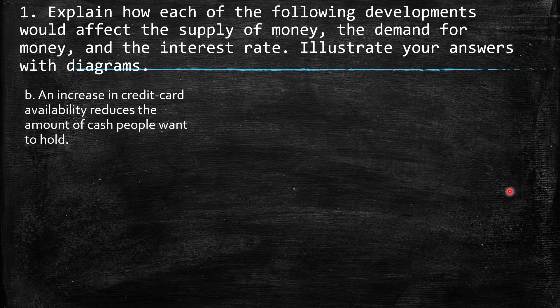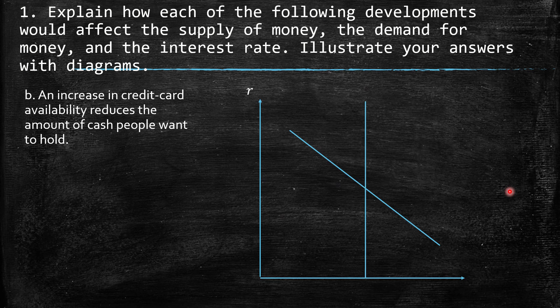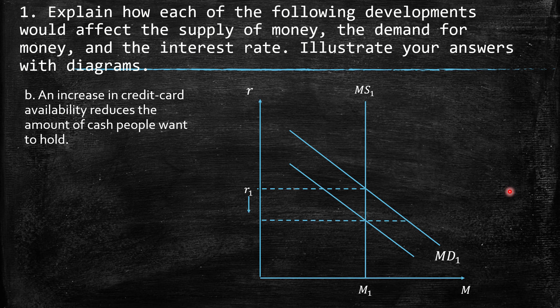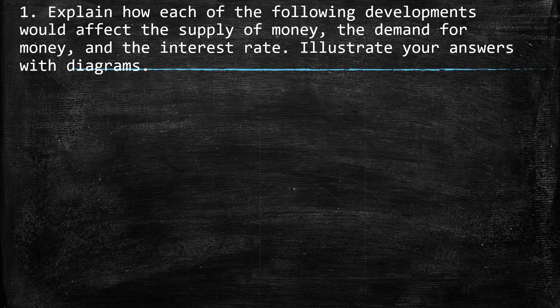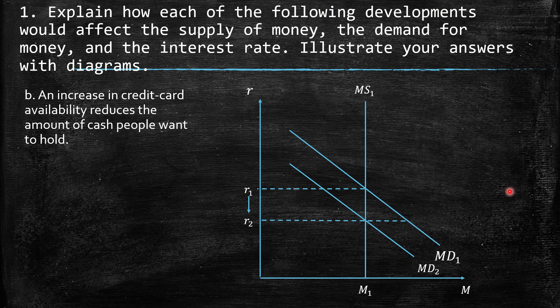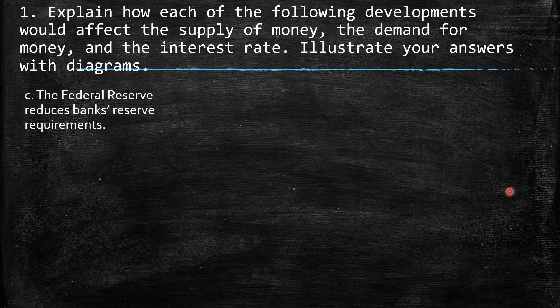b. An increase in credit card availability reduces the amount of cash people want to hold. This affects the money demand directly because people don't want to hold more cash. So we have a decrease in the demand for money — a shift to the left. As a consequence, this disequilibrium brings a lower interest rate but the same equilibrium quantity of money.